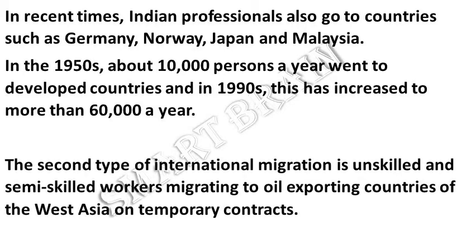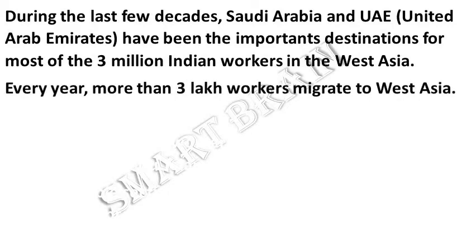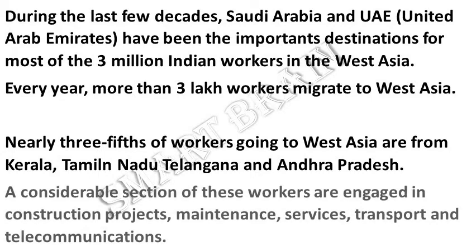The second type of international migration is unskilled and semi-skilled workers migrating to oil-exporting countries of West Asia on temporary contracts. During the last few decades, Saudi Arabia and the UAE have been the important destinations for most of the three million Indian workers in West Asia. Every year more than 3 lakh workers migrate to West Asia. Nearly three-fifths of workers going to West Asia are from Kerala, Tamil Nadu, Telangana, and Andhra Pradesh. A considerable section of these workers are engaged in construction projects, maintenance services, transport, and telecommunications.